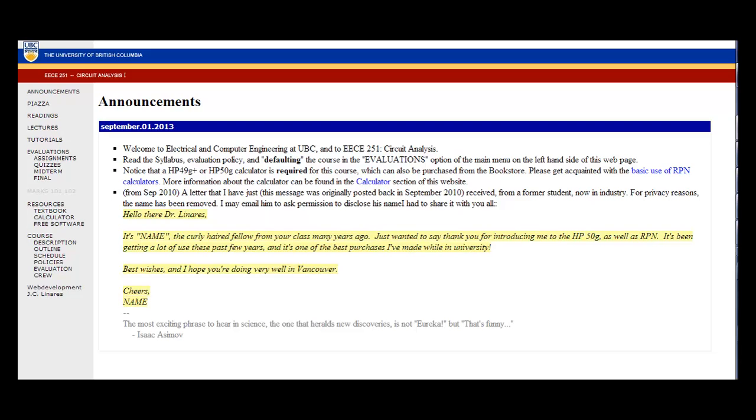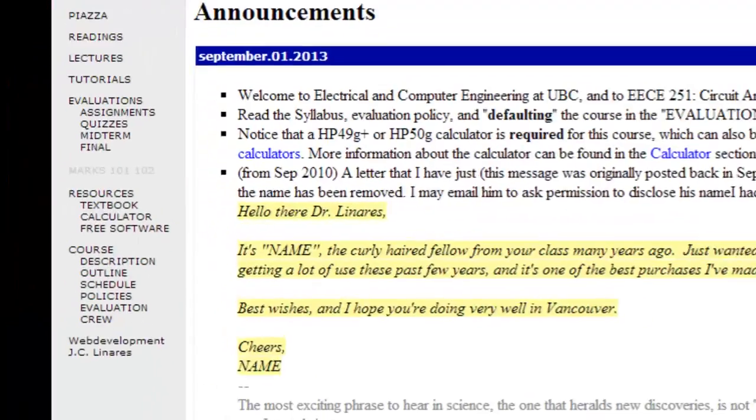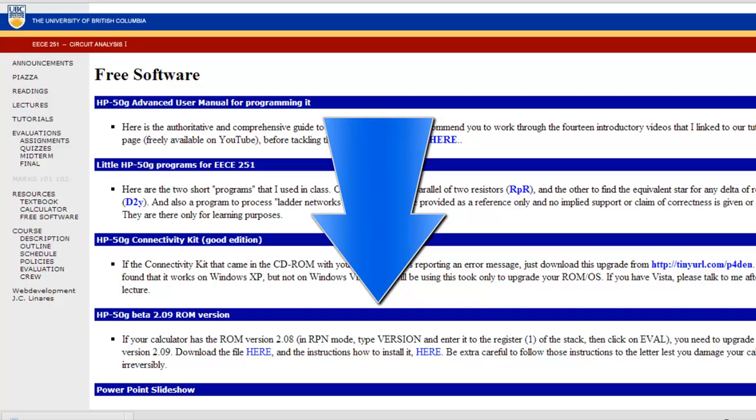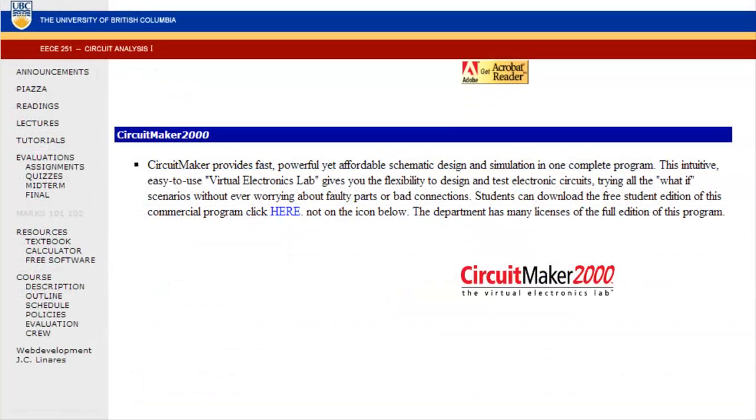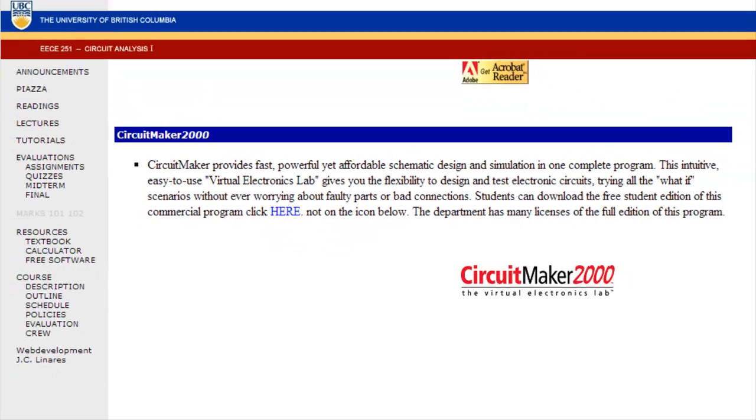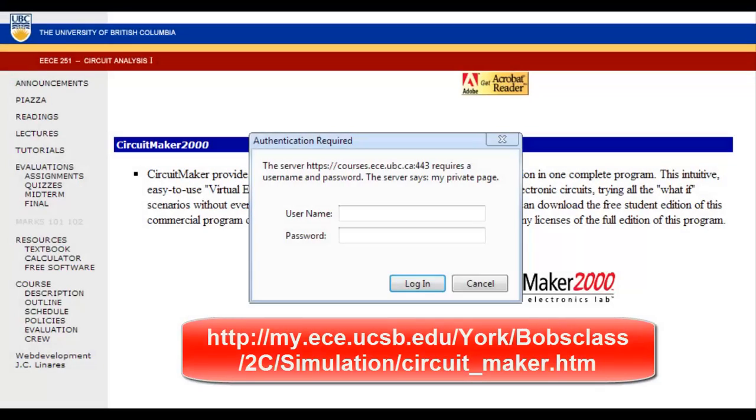The first thing is to go to our course website. In the main menu on the left side of the screen, select Free Software. Then scroll down to the very bottom. There you will find the link to download CircuitMaker Free Student Version. You will need the login and the password for our website, of course.